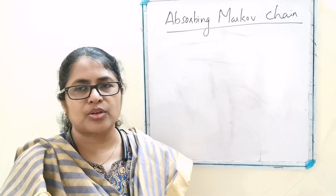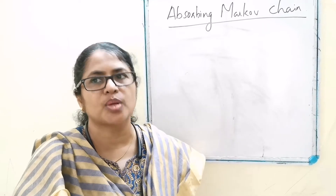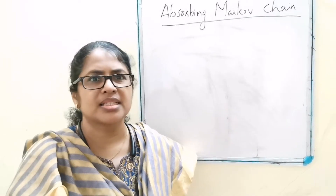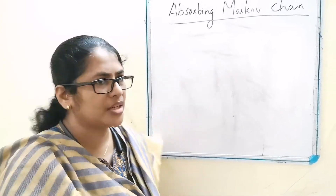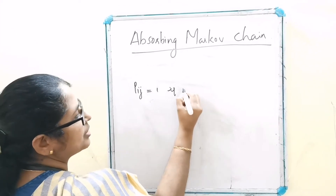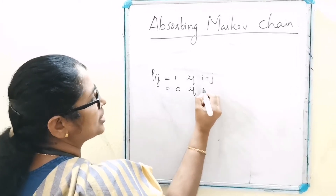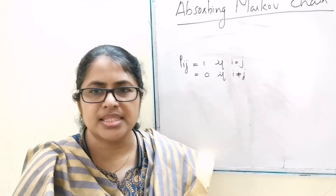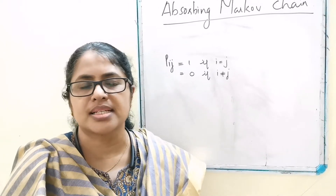A Markov chain is called absorbing if, first, it has at least one absorbing state. Do you remember what we mean by absorbing state? A state I of the Markov chain is called absorbing if Pij equals 1 if I equals J, and equals 0 if I is not equal to J. That is, the system cannot move further once it has reached state I.